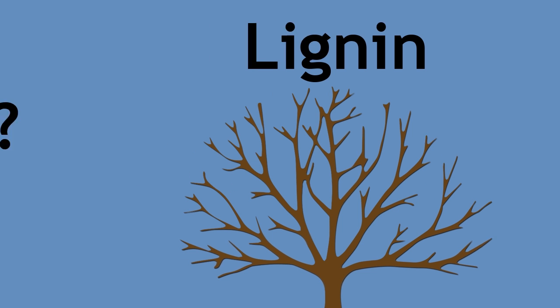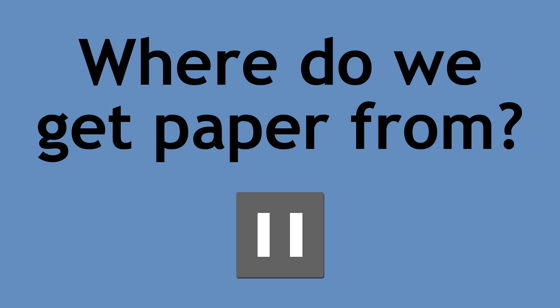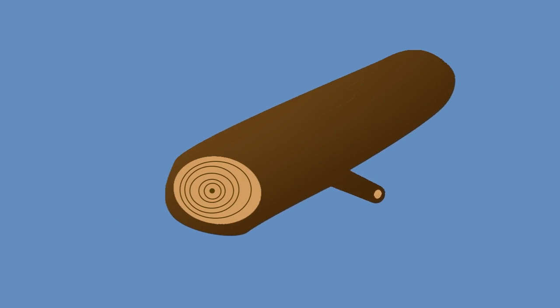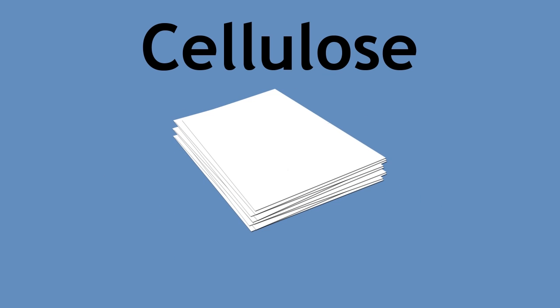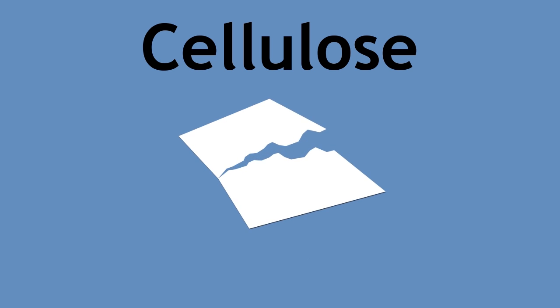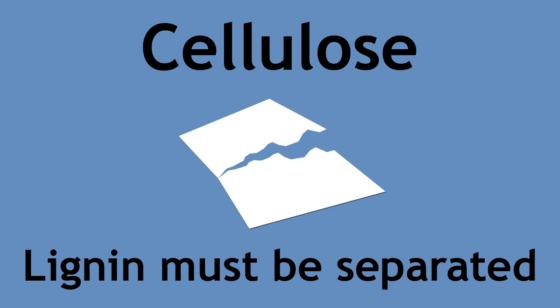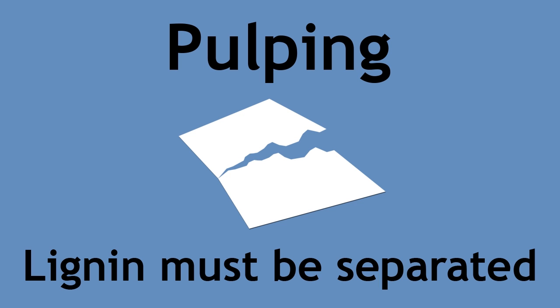Here is a challenge for you: where do we get paper from? Pause, think, and resume when ready. Paper comes from wood, which comes from trees. Paper is in fact made from cellulose — it is just layers of cross-linked cellulose fibers. If you tear a piece of paper and look closely, you will see those fibers. When paper is made, lignin must be separated from cellulose in a process called pulping, or else we would not be able to fold or crumple it.